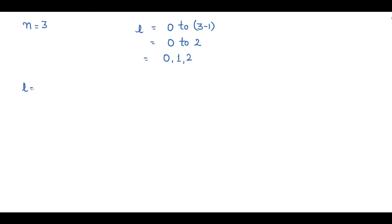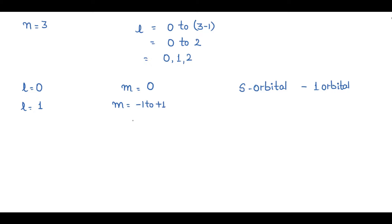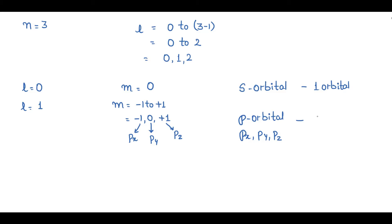For l equal to 0, m is also 0, and this orbital is known as the s orbital — we have only 1 orbital in this s subshell. For l equal to 1, m ranges from minus 1 to plus 1, giving values minus 1, 0, and plus 1. These are the p orbitals: if m is minus 1 it is px, if m is 0 it is py, and if m is plus 1 it is pz — so we have 3 orbitals in the p subshell.